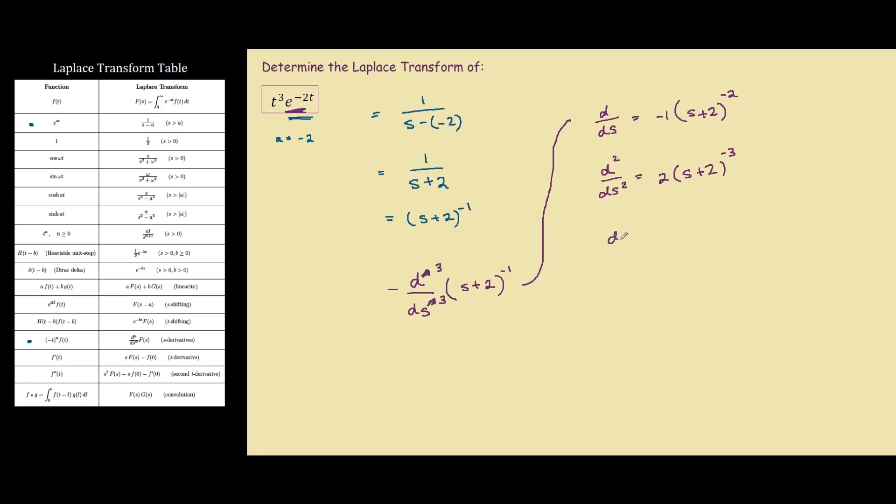So our solution for d cubed over ds cubed equals 2 times negative 3 is negative 6 times s plus 2 to negative 4. And now we include our negative, so if we put negative on both sides, this would be plus. And this is what we were looking for earlier, so our solution would be 6 divided by s plus 2 to the power of 4.